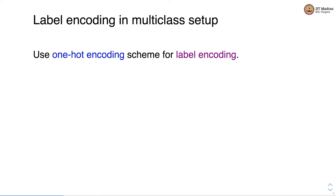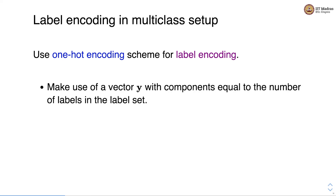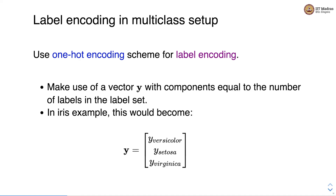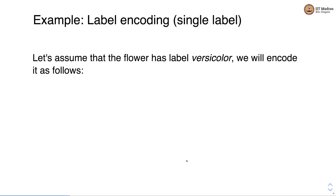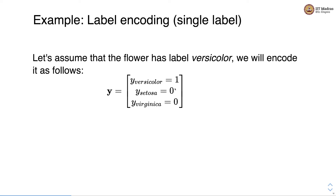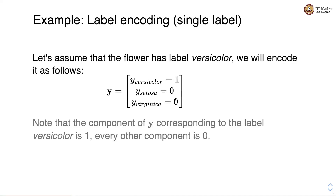We use a one-hot encoding scheme for label encoding in the multi-class setup. We make use of a vector y with components equal to the number of labels in the label set. In the iris example, vector y has three components: y_versicolor, y_setosa, and y_virginica. If the flower is of type versicolor, y_versicolor is set to 1 and the other labels are set to 0, giving a vector representation of [1, 0, 0].